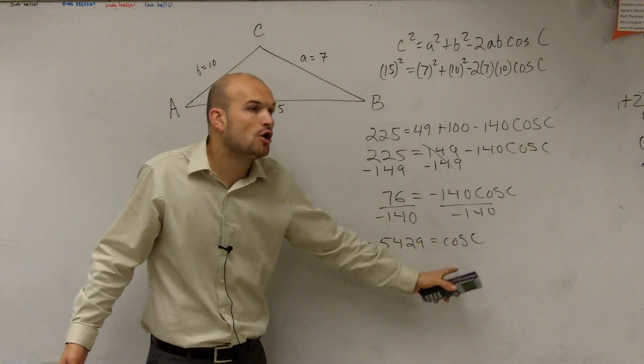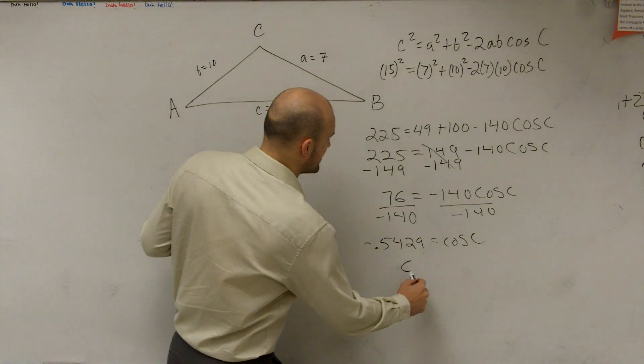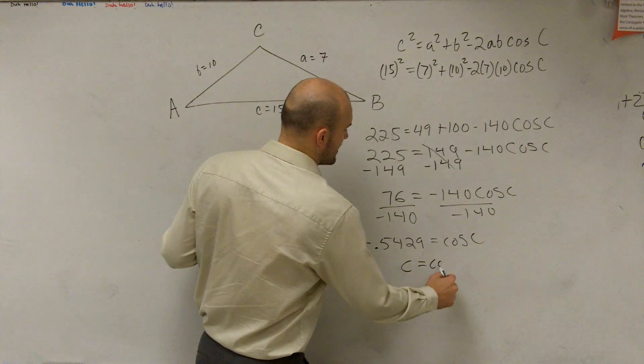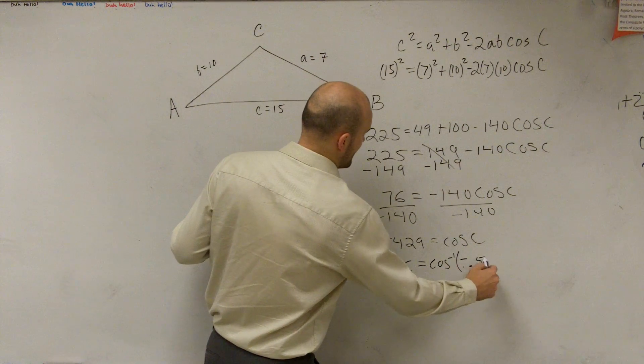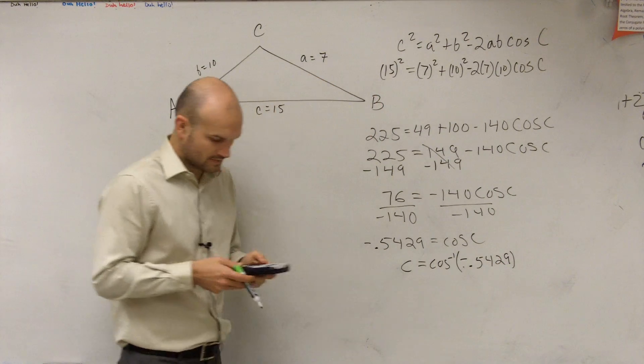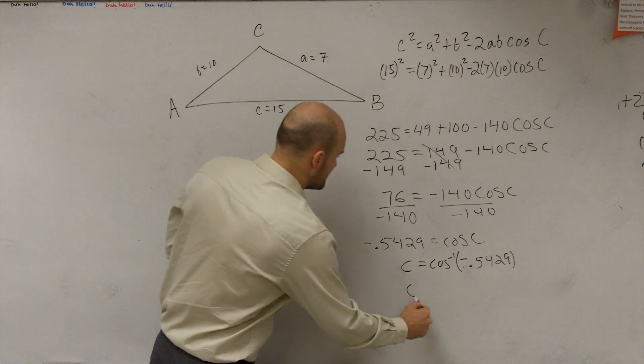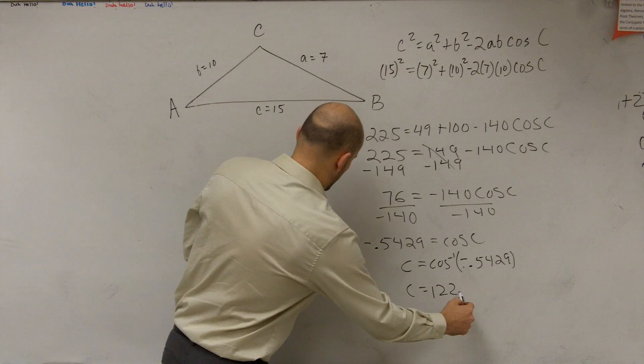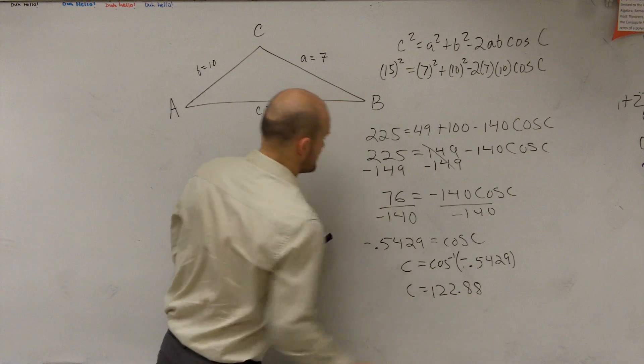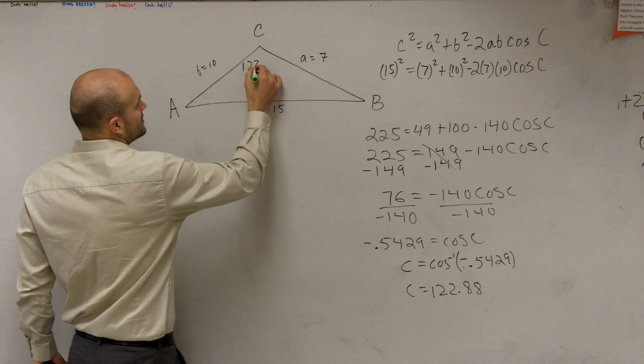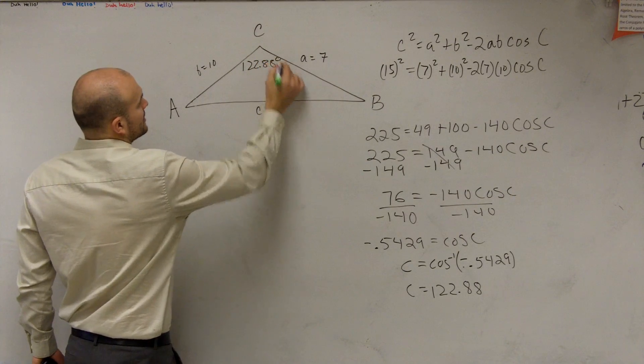Remember, to find the angle c, it says cosine of my angle c equals this value. So to find the value of c, I'm now going to have to use inverse cosine of negative 0.5429. So I do inverse cosine, second answer, and I get c equals 122.88. So I get c equals 122.88 degrees.